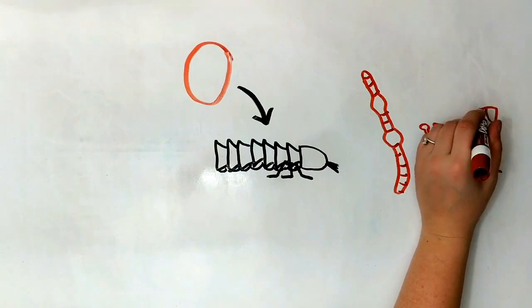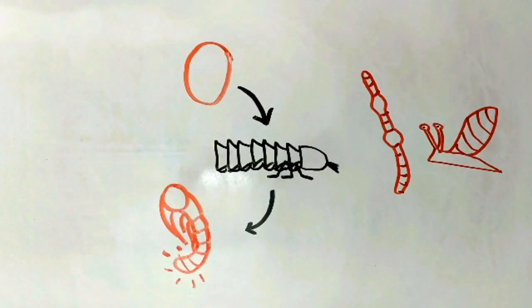Since fireflies are beetles, they do pupate before molting into an adult.